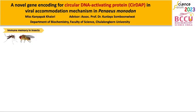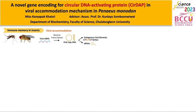Did you know that some insects have the ability to resist viral infection? It means that this animal can co-exist with virus without showing any sign of disease. This phenomenon is called viral accommodation, requiring memory from the first time of infection, where viral mRNA can be converted to linear and circular viral copy DNA.